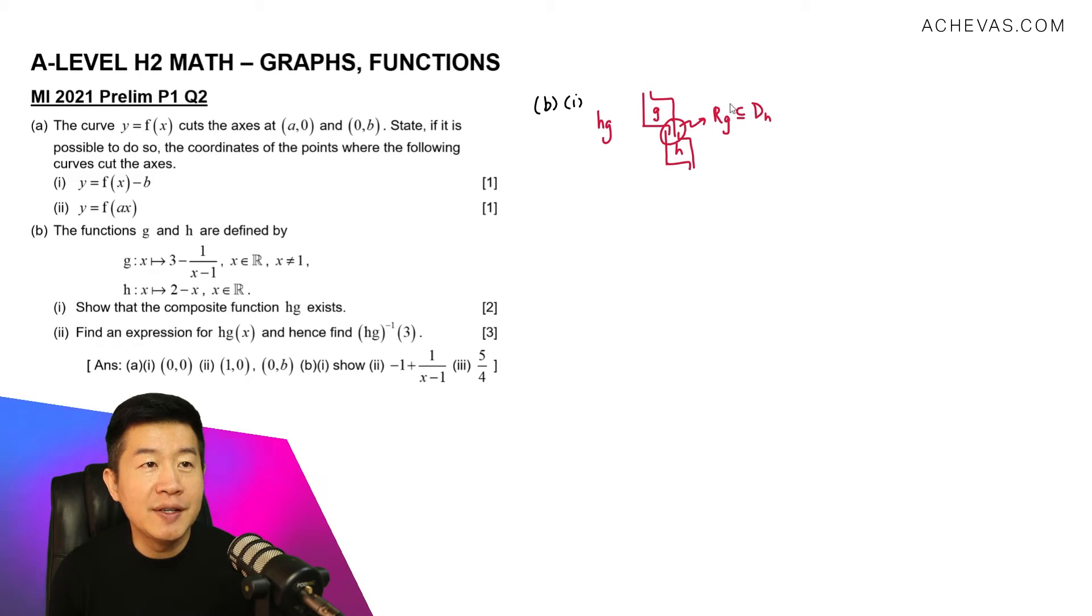So what we are going to do is to try to analyze numerically what is the range of g and the domain of h. In fact, this is always going to exist because the domain of h, according to what the question has given to us, is all real numbers. So it should accept everything. But we still need to do a numerical proof. So let's first try to find the range of g.